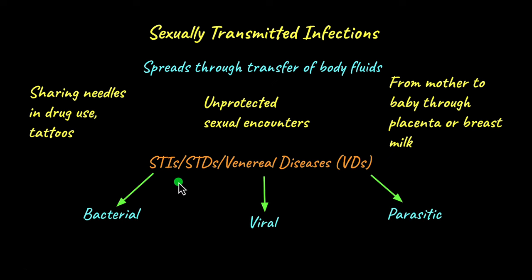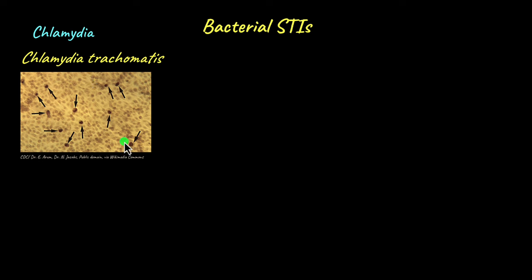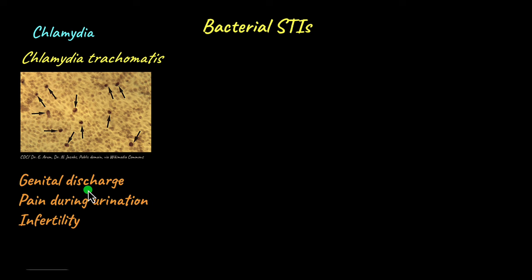There are three major causative agents: bacterial, viral, and parasitic. In this video we'll focus on bacterial and viral STDs. A common bacterial STI is chlamydia, caused by the bacterium Chlamydia trachomatis. Chlamydia is quite tricky because at its early stages there are no symptoms. As the disease progresses, symptoms like genital discharge and pain during urination can occur, but only after the infection has had time to grow.